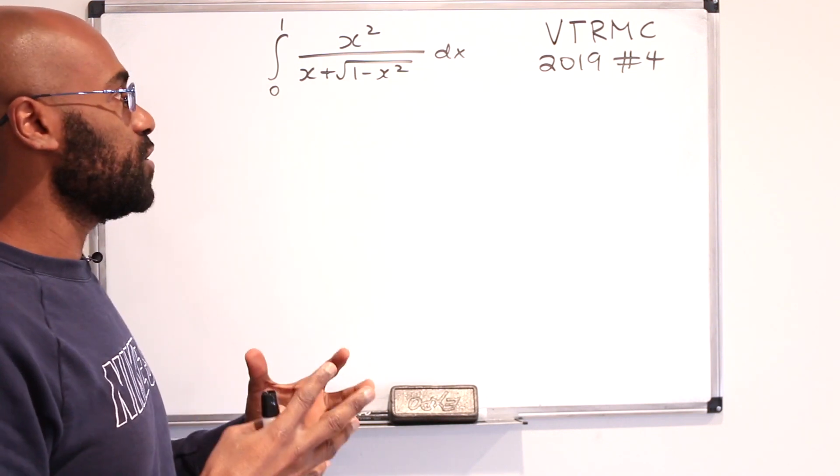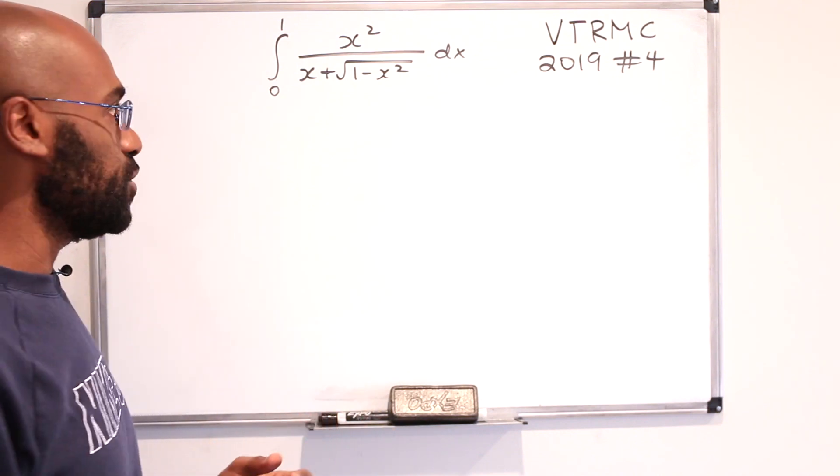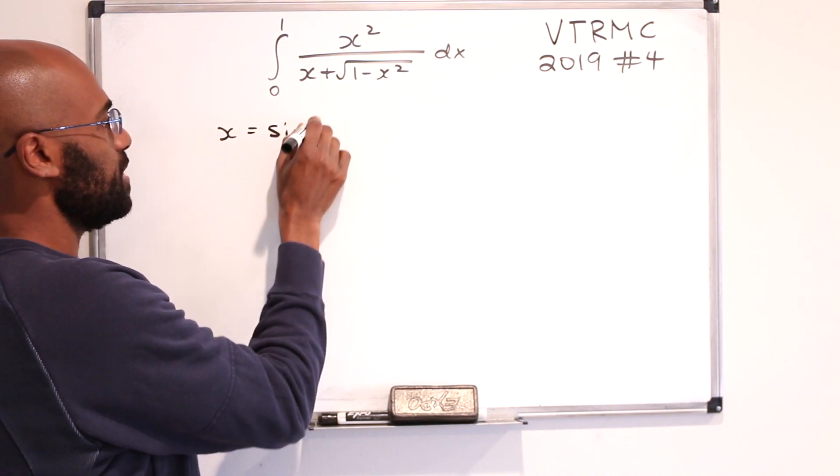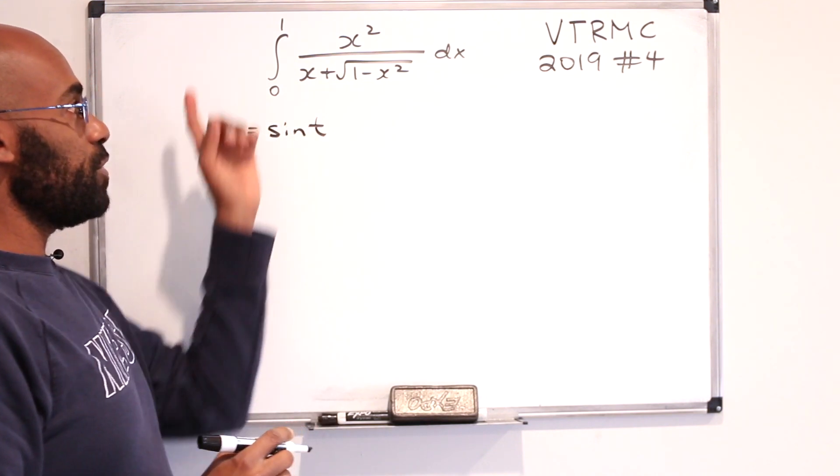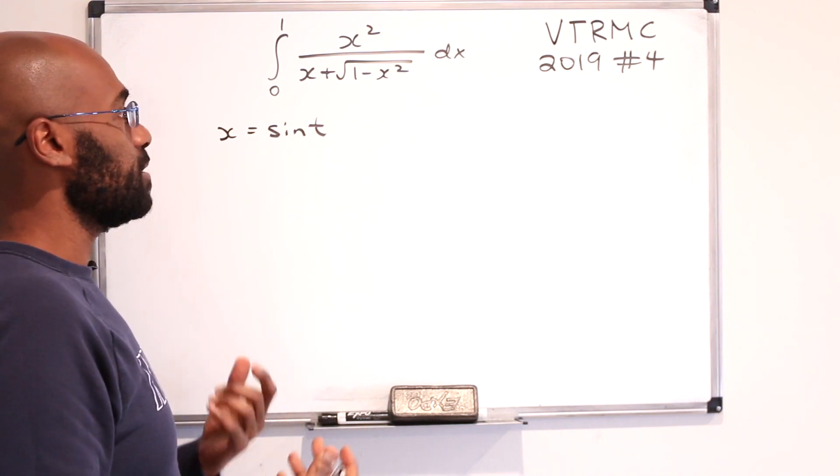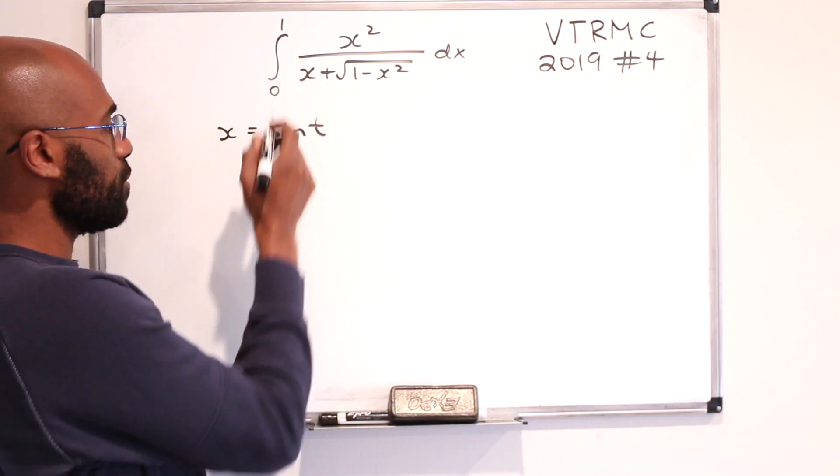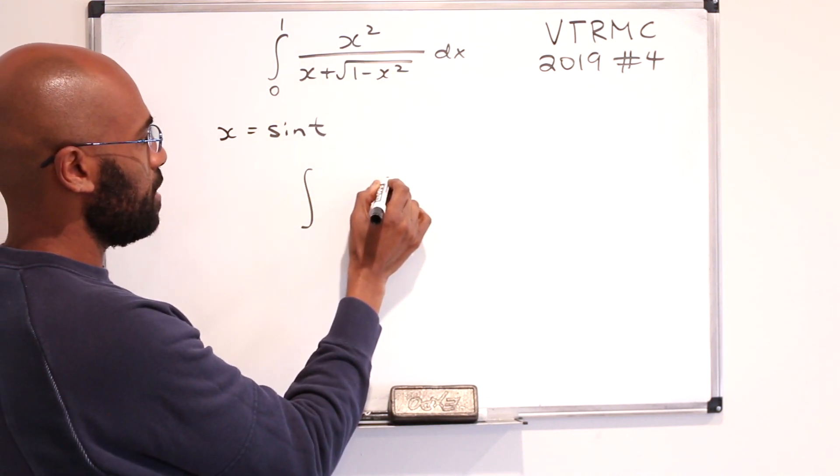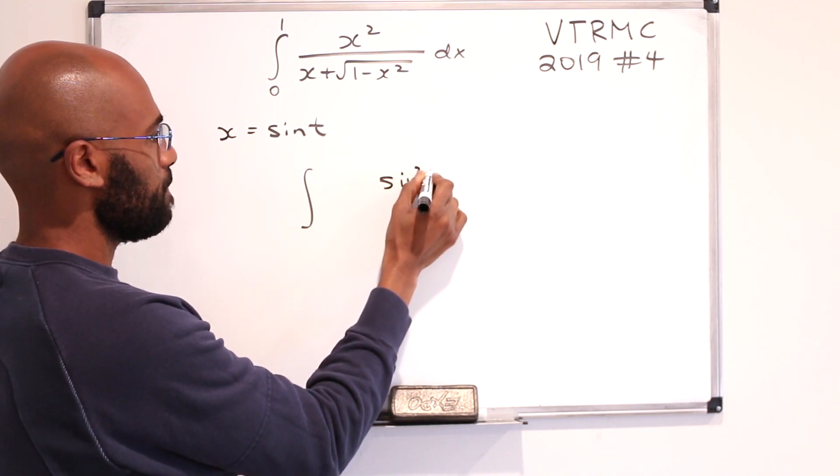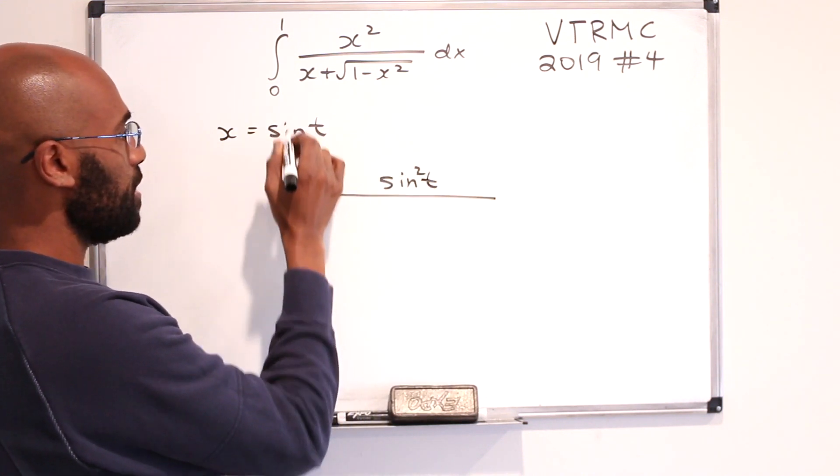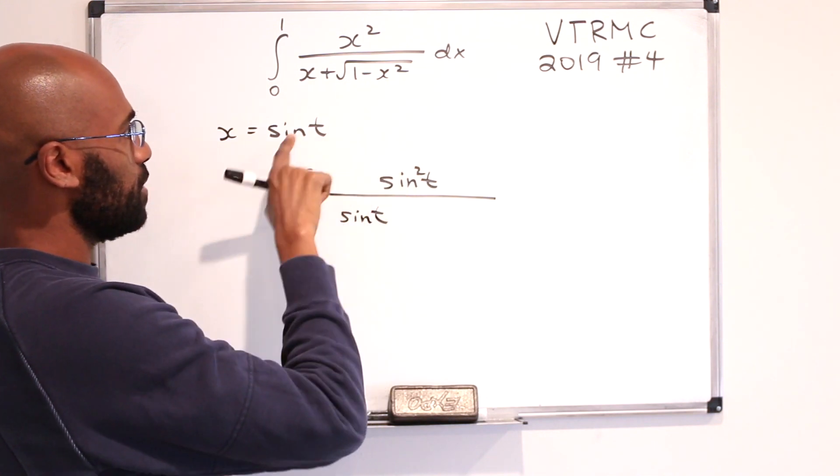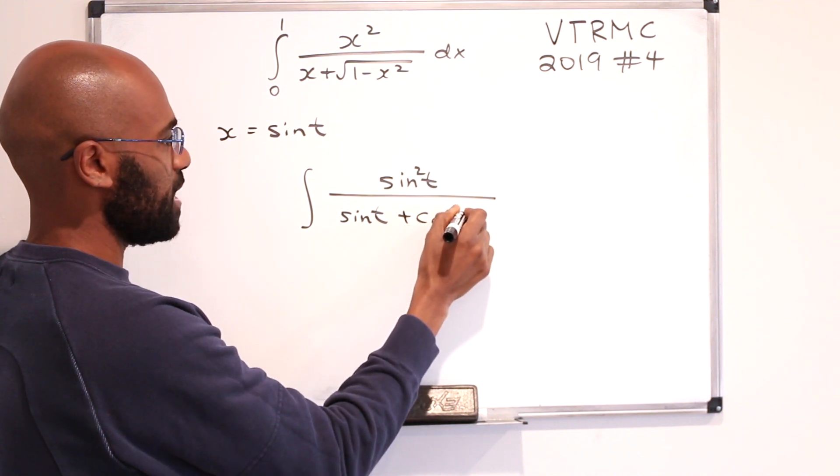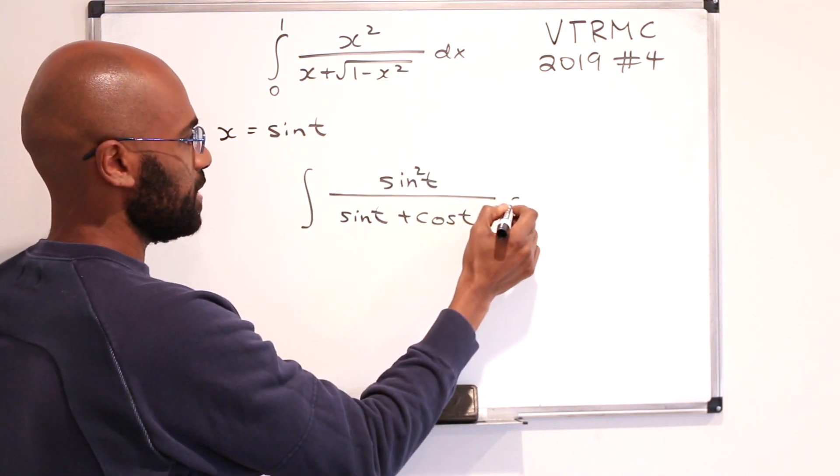So if we let x be sine t, then we can rewrite this integral in a different form using the sine function. Our integral changes to, I'll leave the bounds out for now, on the numerator we get sine squared t, and on the denominator we get sine t times the square root of one minus sine squared is cosine squared, so we get cosine t here. And that's dt,